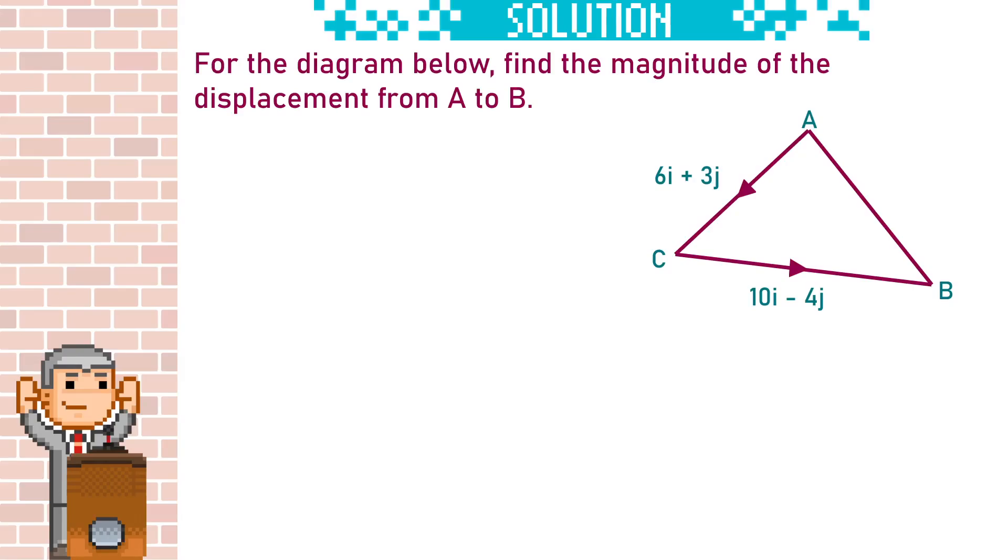We cannot go directly from A to B, but we can travel to C first and then go to B. We can add the i's and the j's from each part of the journey together to find the vector for A to B. So the A to C part will be 6i plus 3j and the C to B part will be 10i minus 4j.